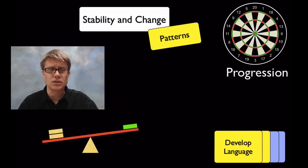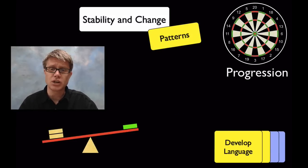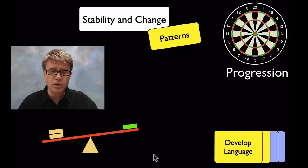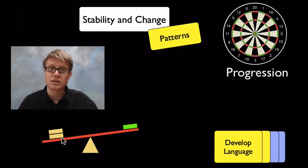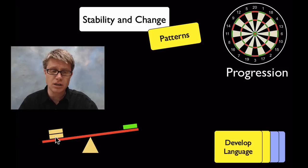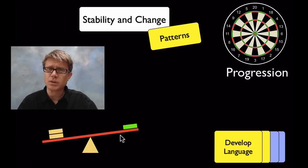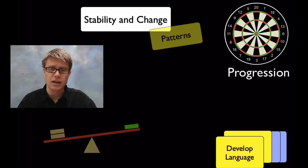How do you teach this? Start by giving students the language of stability, change, and sensing patterns. A great way to begin is with a balancing activity. Using a simple lever, students can play around and find relationships between the two sides — how do we get it to maintain stability, and what happens if we don't maintain stability over time?